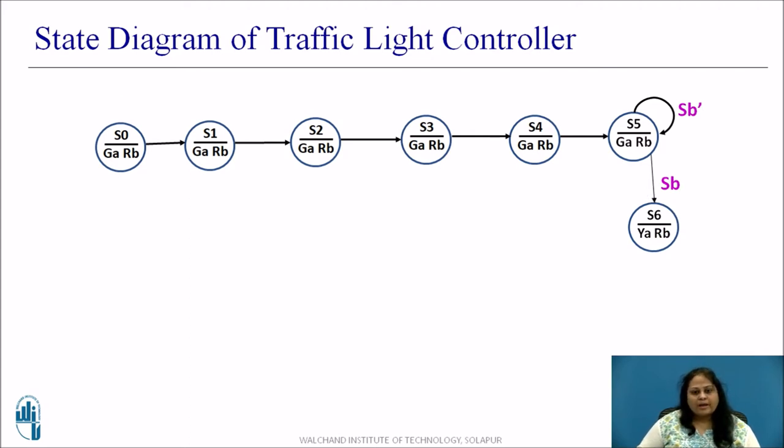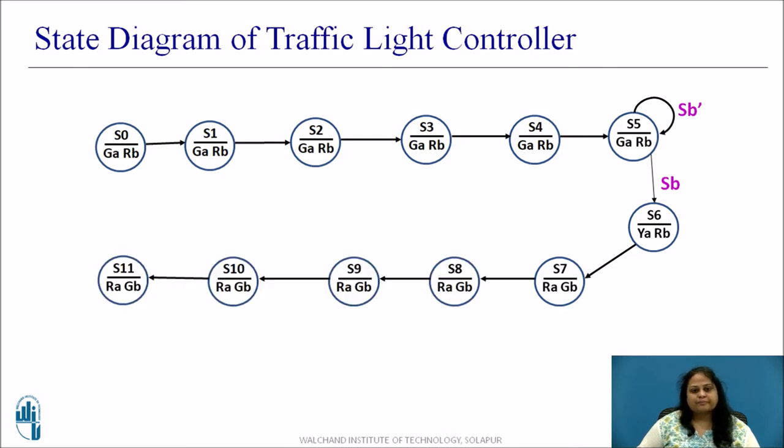In this state YA is equal to RB equal to 1 and for the next clock pulse state transition takes place and moves into state S7. In this state RA is equal to GB equal to 1 that is green of B is on. This output remains same for 5 state transitions that is from S7 to S11. At the end of 50 seconds that is in S11 both the sensor values are checked and if SA dash and SB that is if SA equal to 0 and SB equal to 1 then it remains in the same state S11. Only when either SA becomes 1 or SB becomes 0 the state transition takes place.